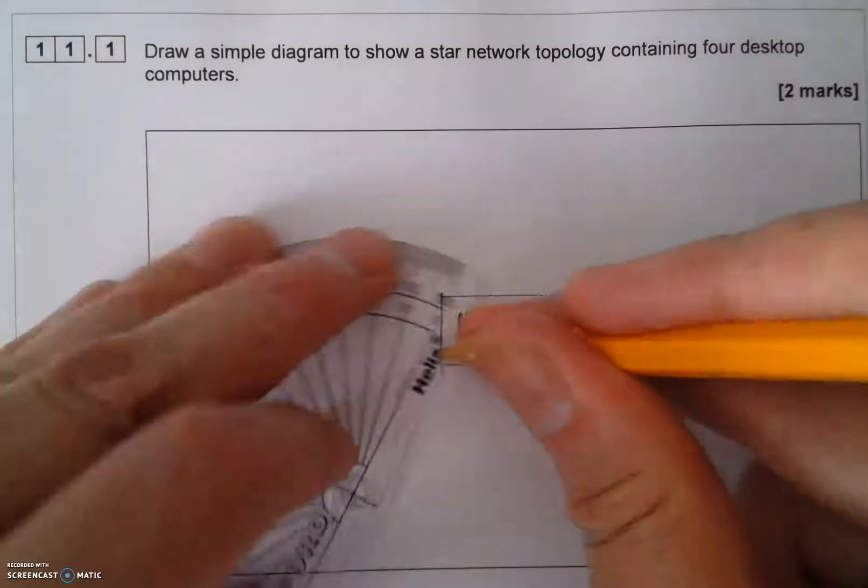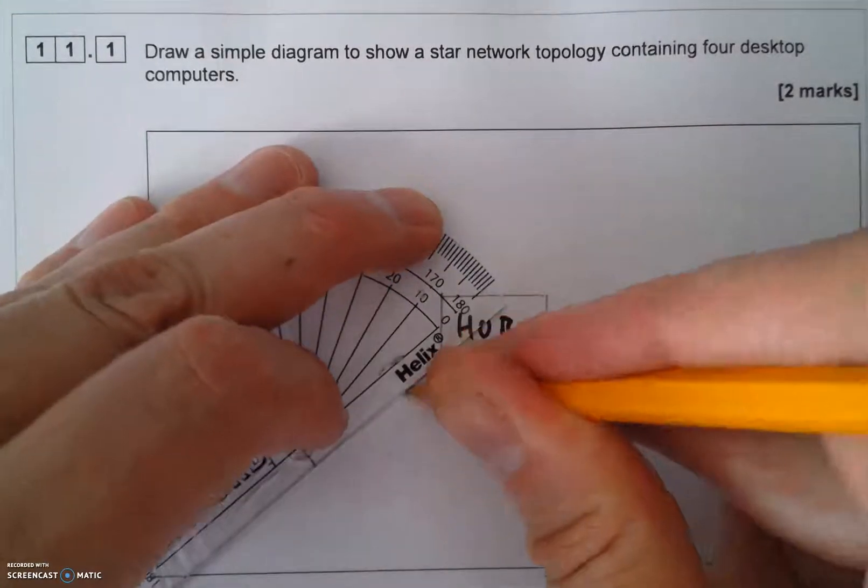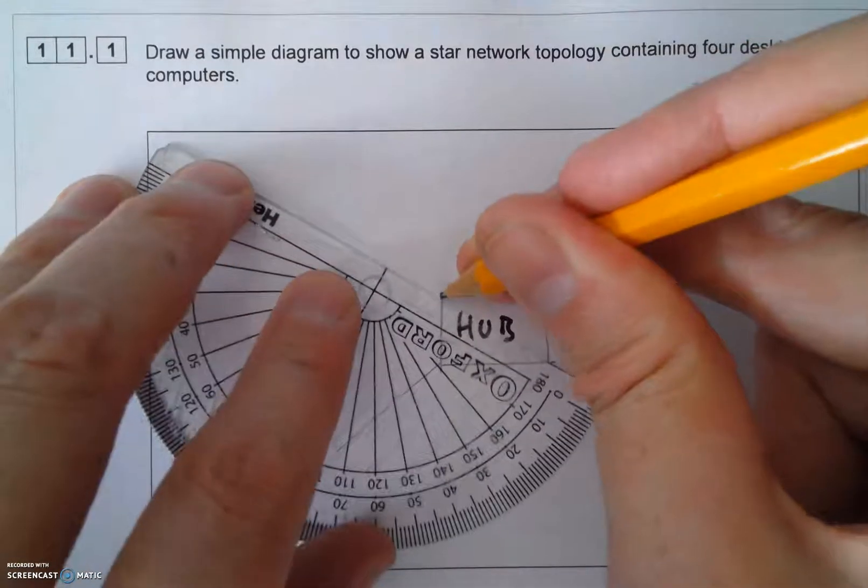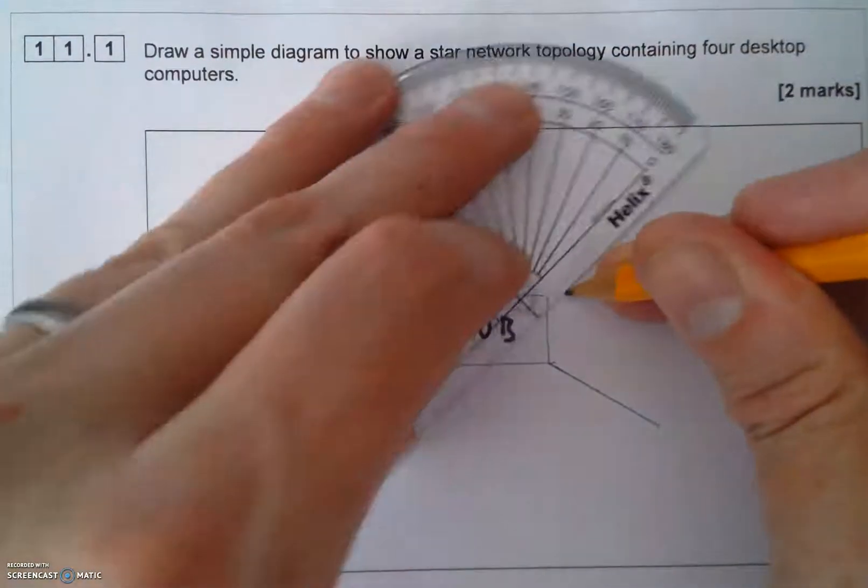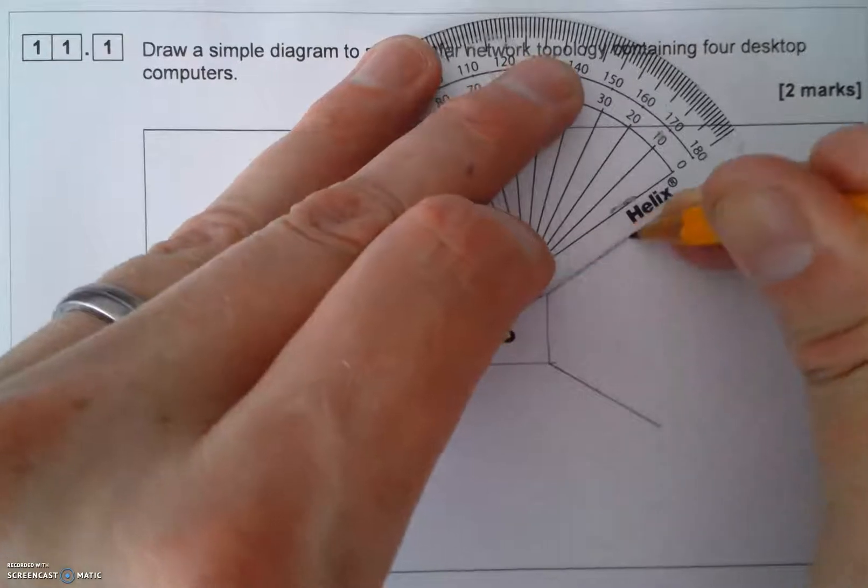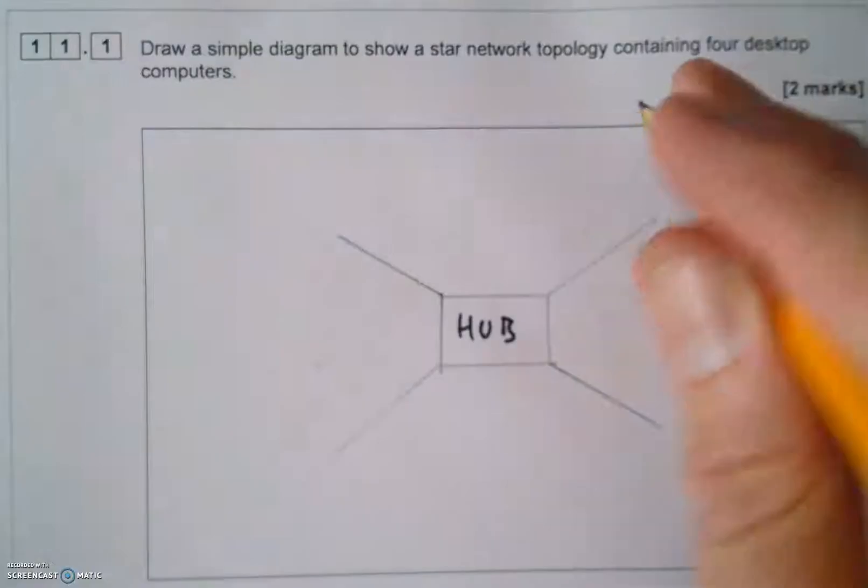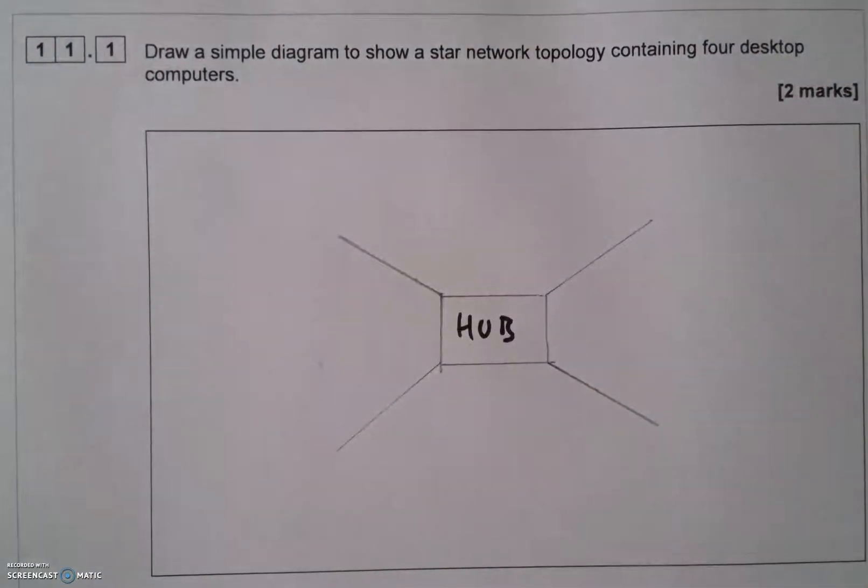So I'm going to come out like that and you should see it starts to resemble a star shape. What I'd recommend you do if you get a question like this is draw it so it looks like a star as much as possible, so the examiner can see that you've actually recognized that this is a star network.